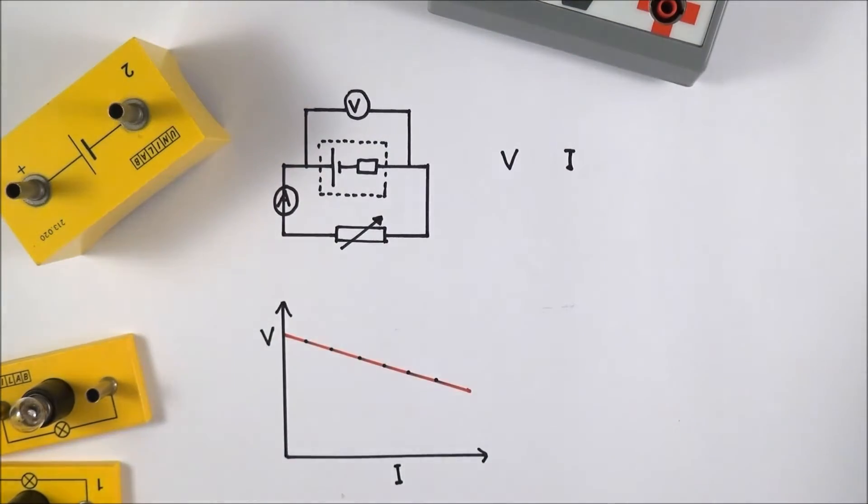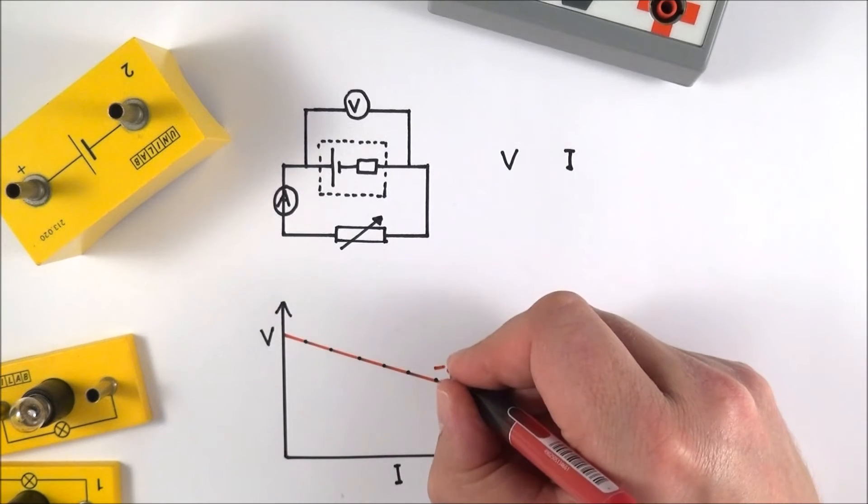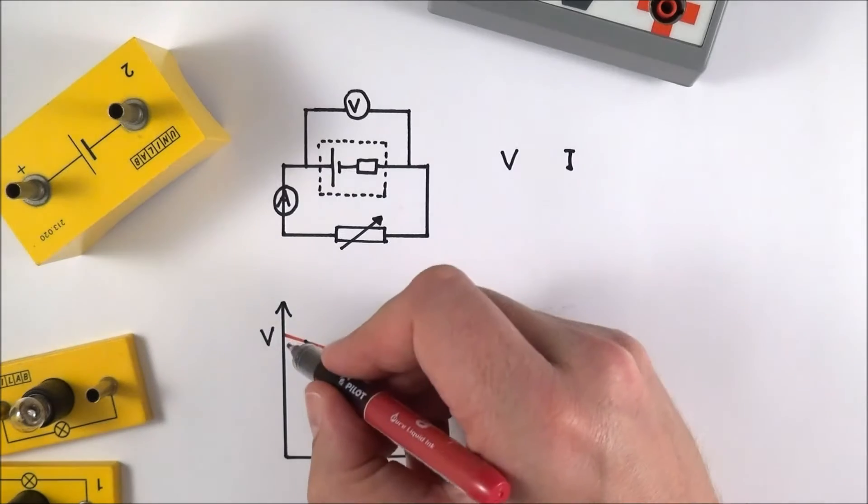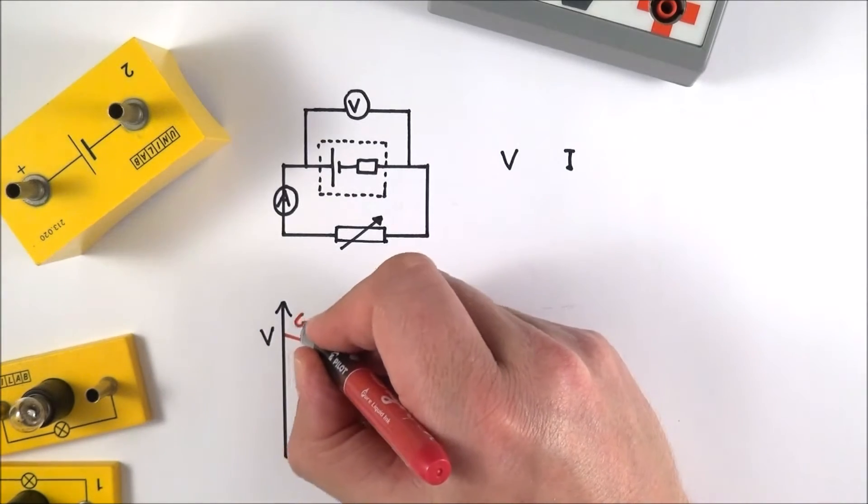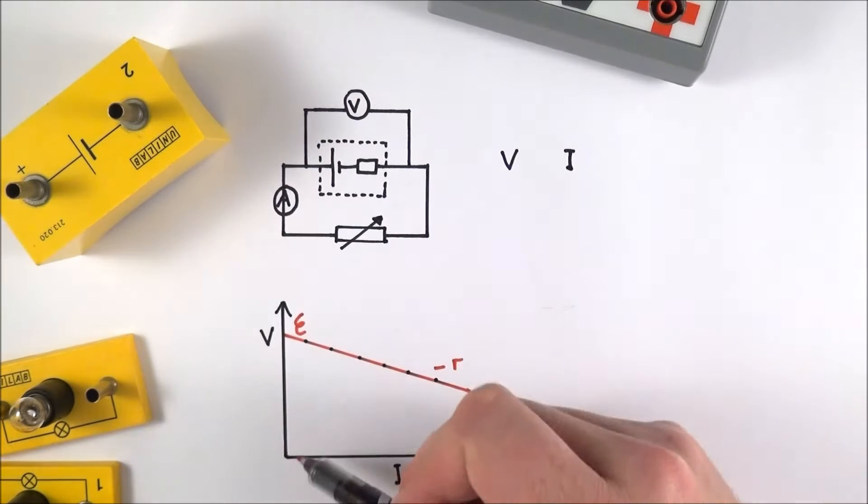This allows you to measure the internal resistance, because internal resistance, which is little r, is equal to minus the value of the gradient. The intercept here, the y-intercept, is equal to the EMF of that cell. This is effectively the EMF when there's no current flow.